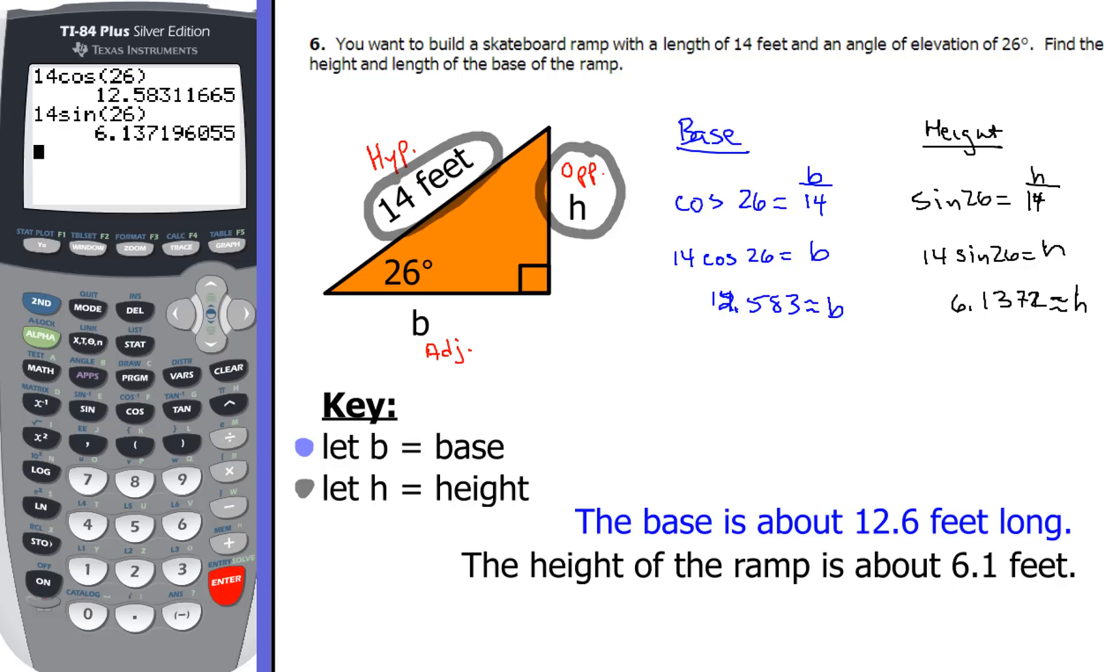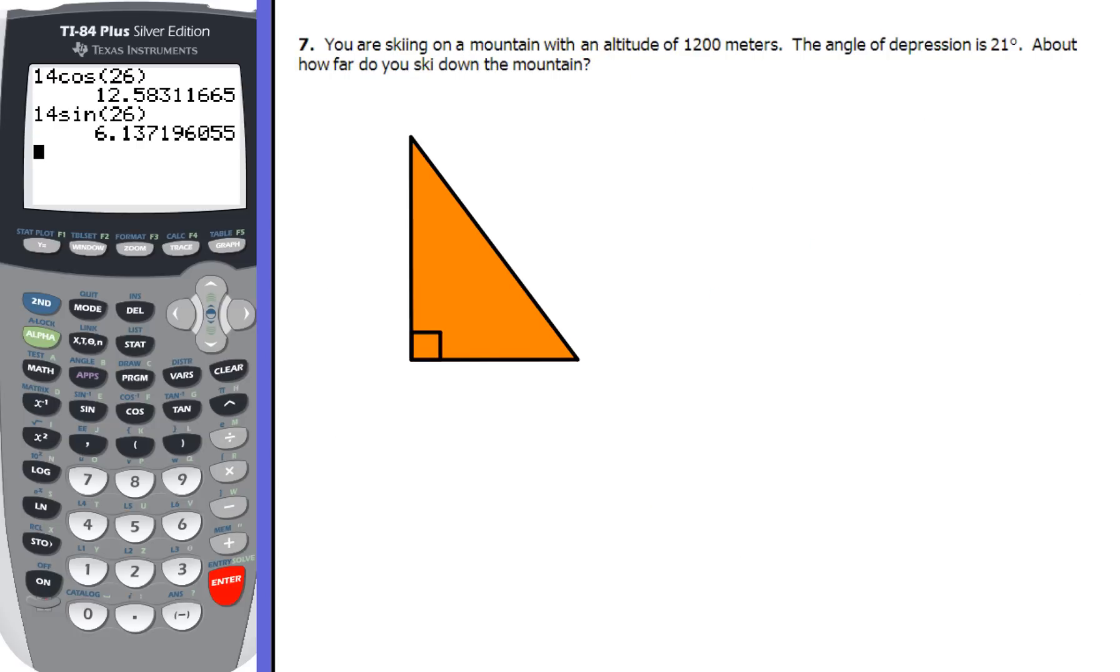Now let's take a look at example number 7. In this example, here you're going to be skiing down a mountain with an altitude of 1200 meters. The angle of depression is at 21 degrees. About how far do you ski down the mountain? So here's kind of a representation of our mountain. What I want you to do is fill in those numbers, 1200 meters and 21 degrees, to where you think they should go.